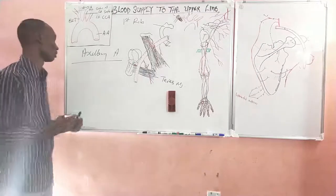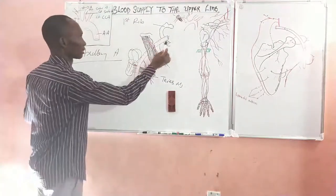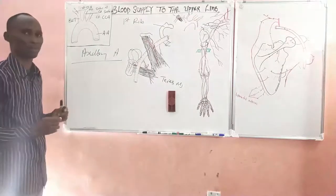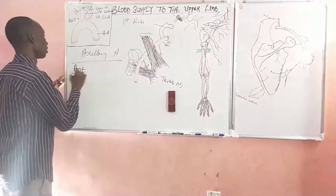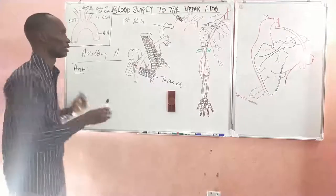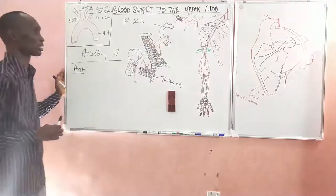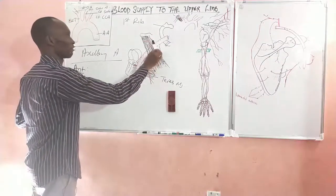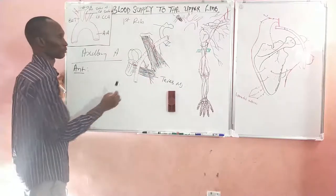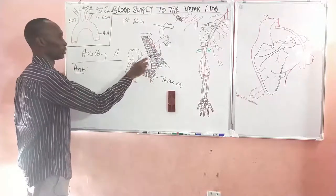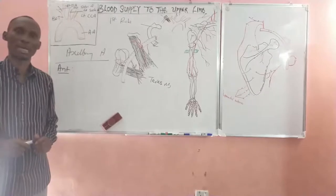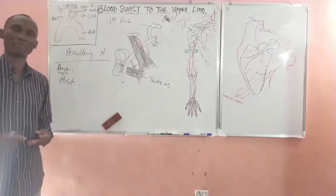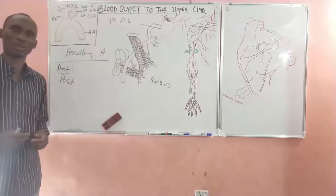We will start with the first part. The first part runs from the outer border of the first rib to the upper border of pectoralis minor. This part has anterior relations: we will see the clavipectoral fascia covering it, and also the clavicular head of pectoralis major forming the anterior relation. Clavipectoral fascia is the fascia that runs from the clavicle, wraps around pectoralis minor, and then goes down to the axilla. For the posterior relation, we see the first two digitations of serratus anterior and the nerve running to it, the long thoracic nerve.